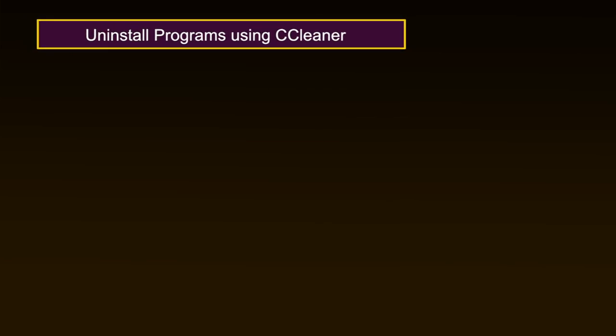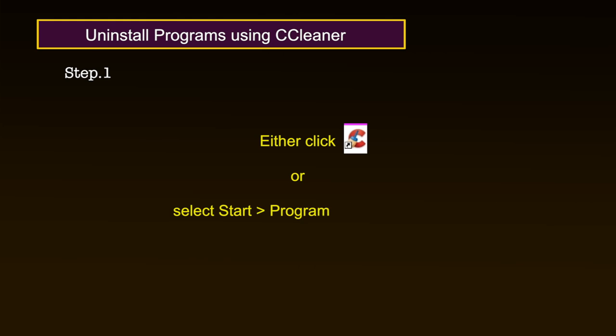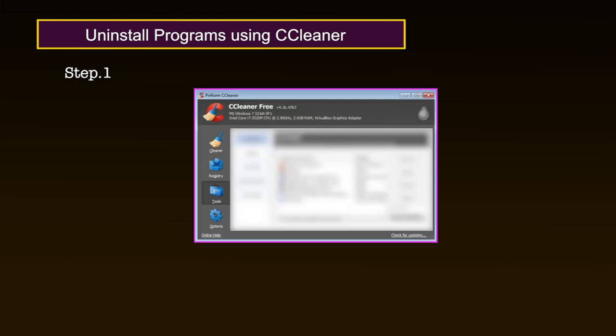Now let us see how to uninstall programs using CCleaner. Make sure the program to be deleted is not essential to the proper functioning of your computer system before doing so. By deleting unused or unwanted previously installed software before running CCleaner, you may also remove their temporary files and folders, reducing the number of files to be deleted and the length of the cleaning process. The CCleaner Uninstall feature is equivalent to the Uninstaller Program feature found in Control Panel, but lists programs more clearly and quickly. Step 1: Either click on the logo or select Start > Programs > CCleaner to activate the CCleaner console.